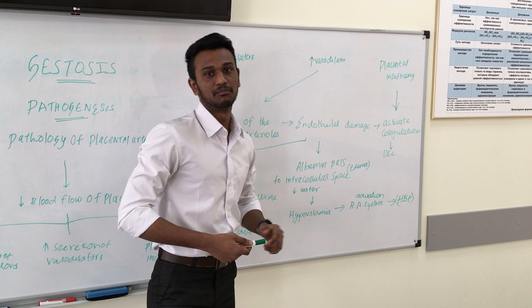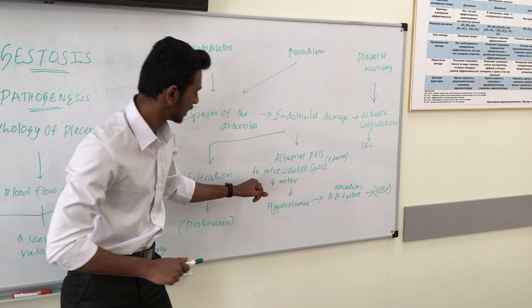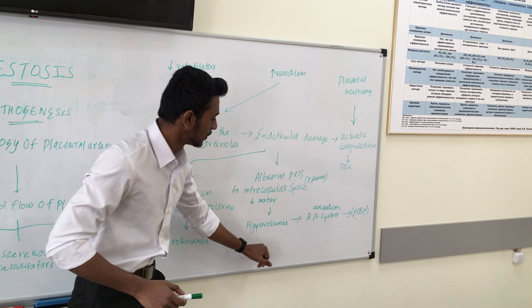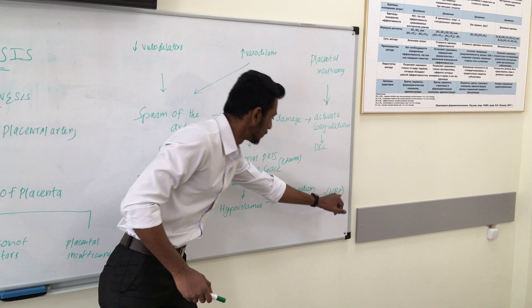Due to endothelial damage, bradykinin and similar mediators are activated, permitting albumin to pass from the intravascular space. This decreases plasma water, giving edema. The resulting low water volume causes hypovolemia, which activates the renin-angiotensin system, leading to high blood pressure. Additionally, endothelial damage causes filtration of albumin into the urine, producing proteinuria.